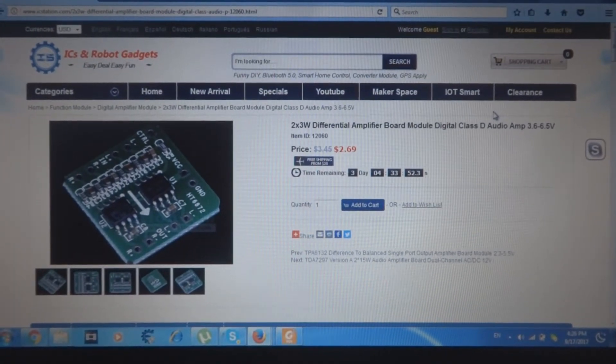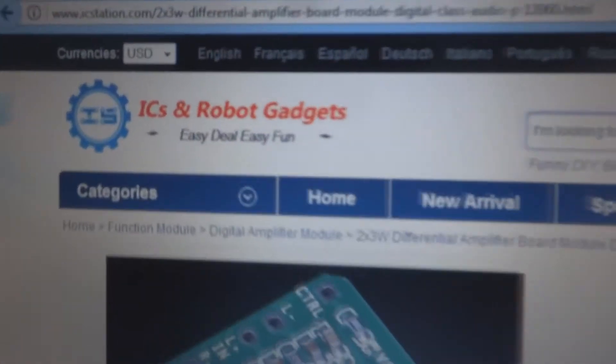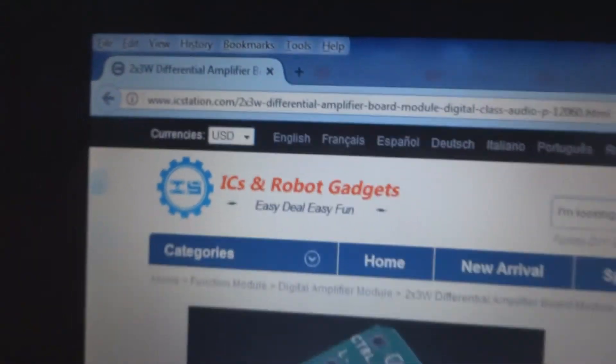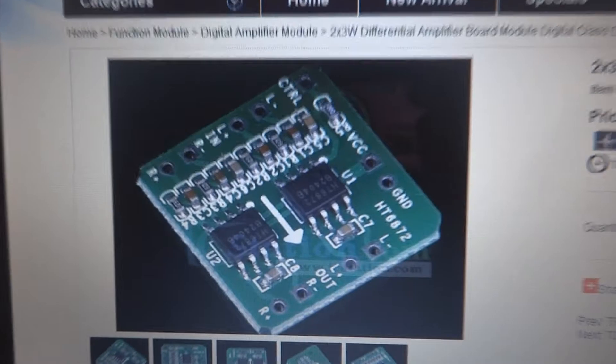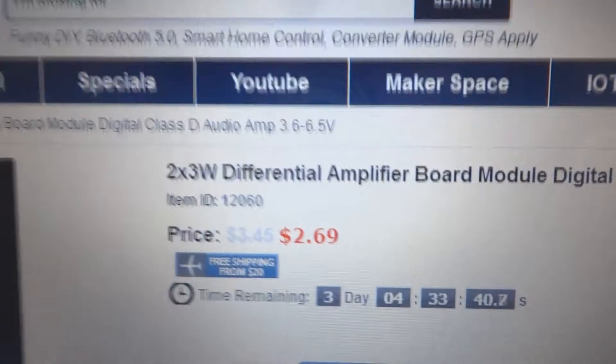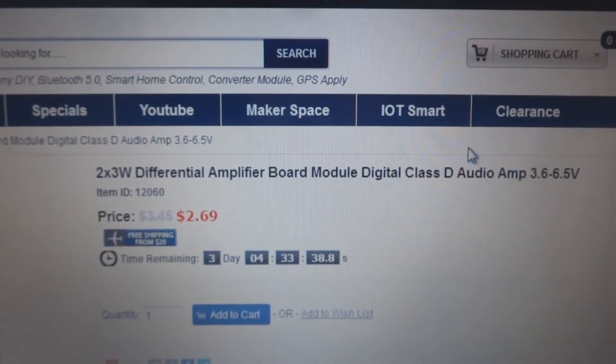Viewers, here is the IC Station website. You can see the address here. This is a stereo amplifier, Class D, with the description written over here.